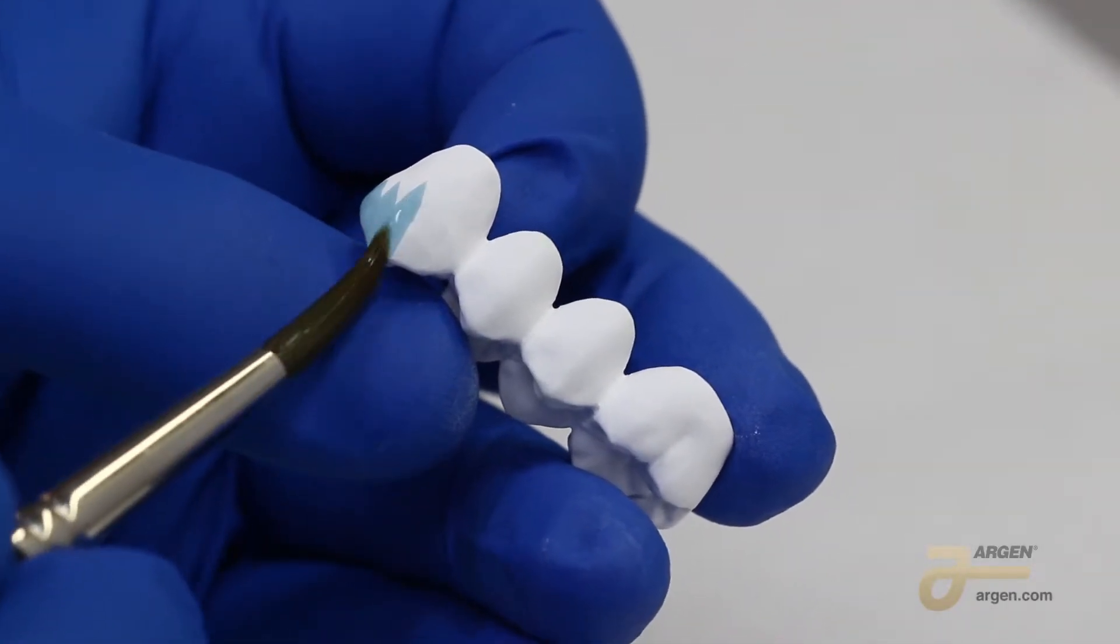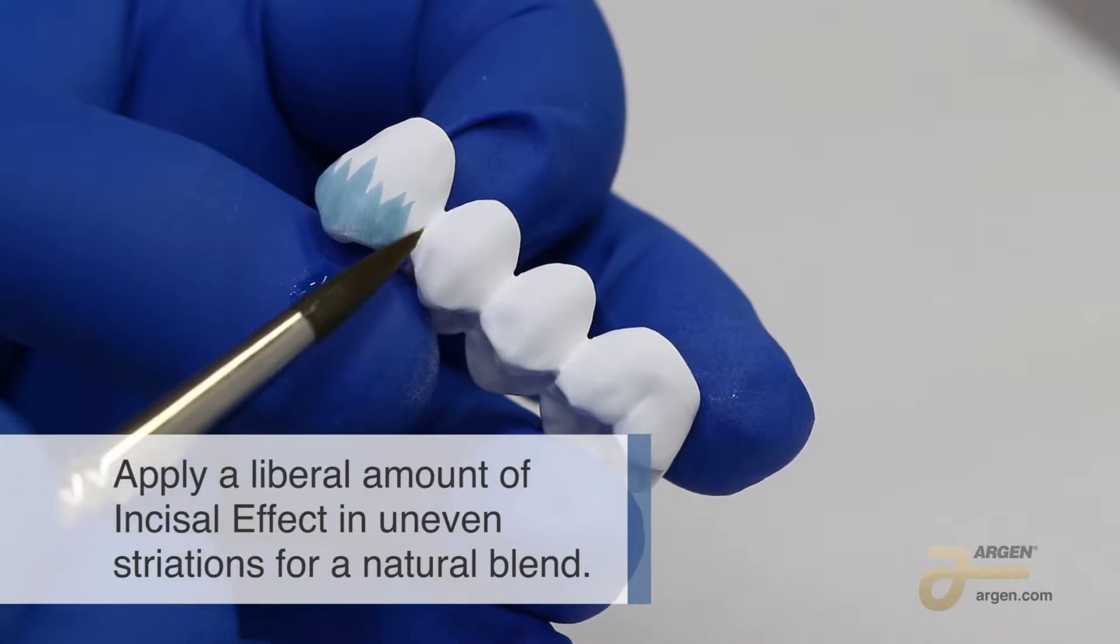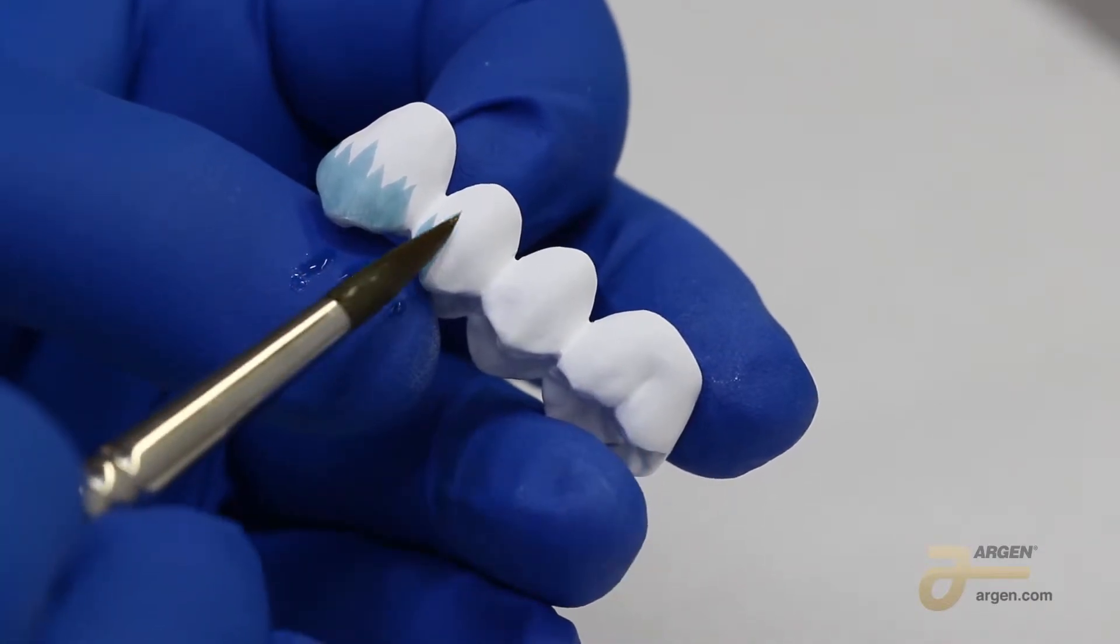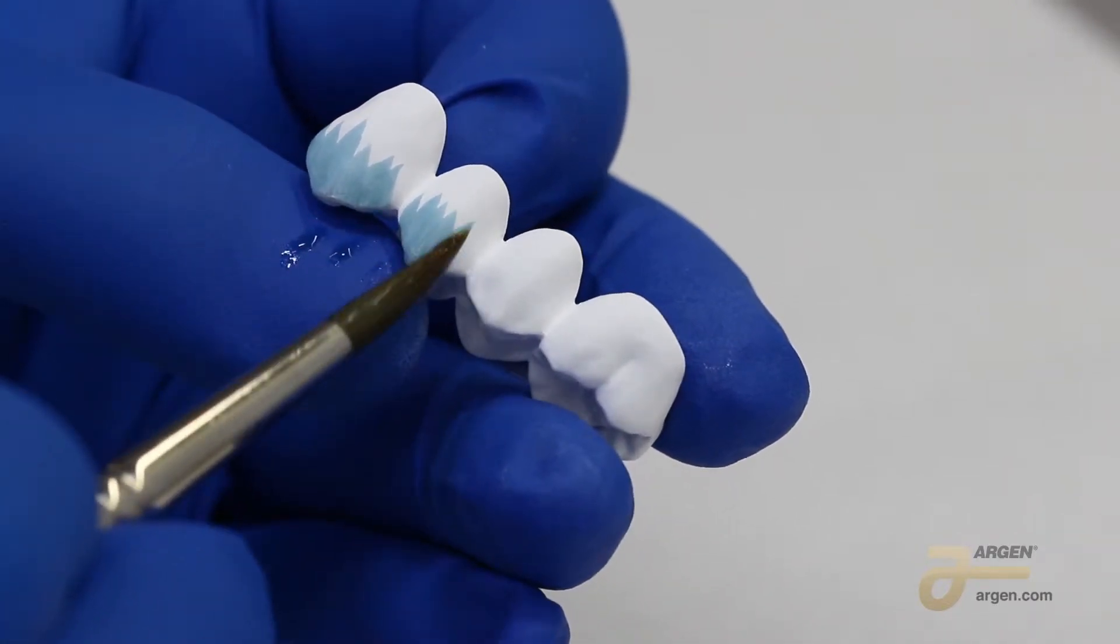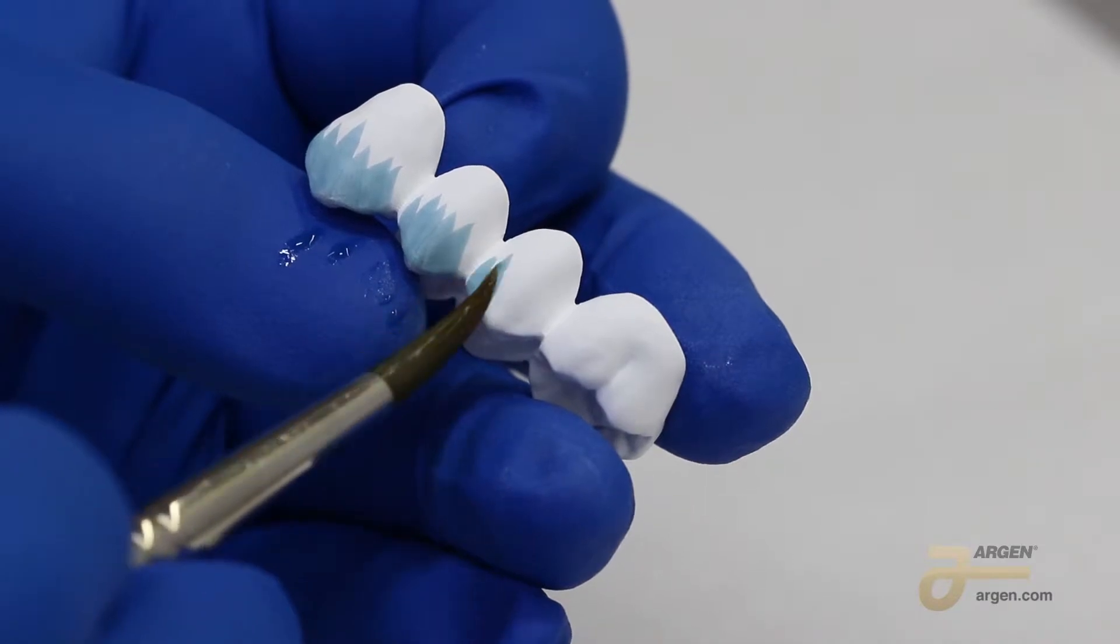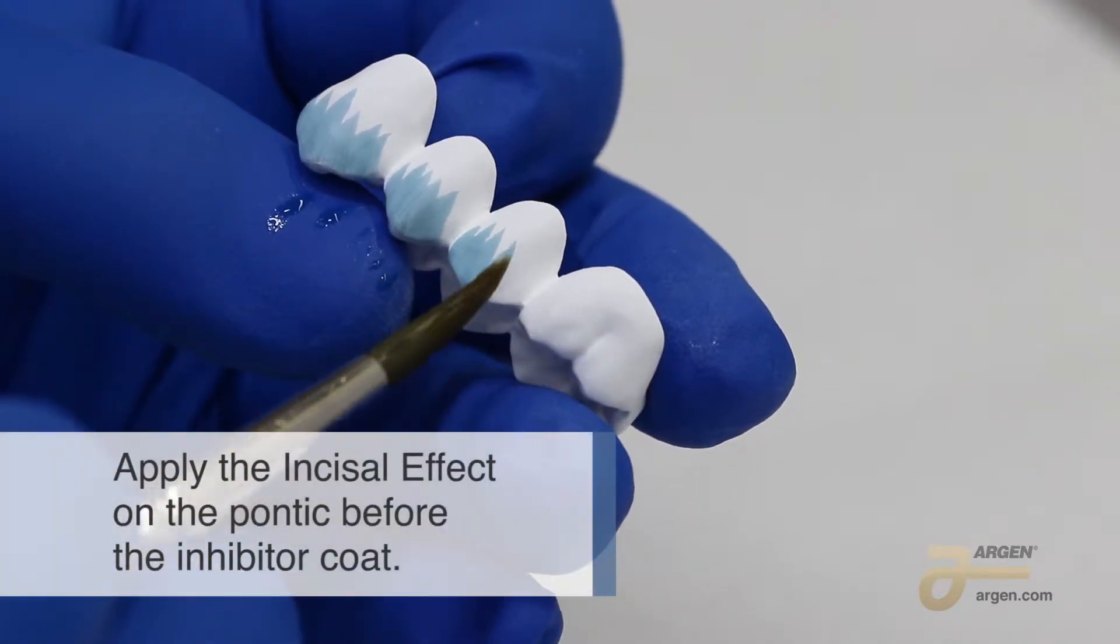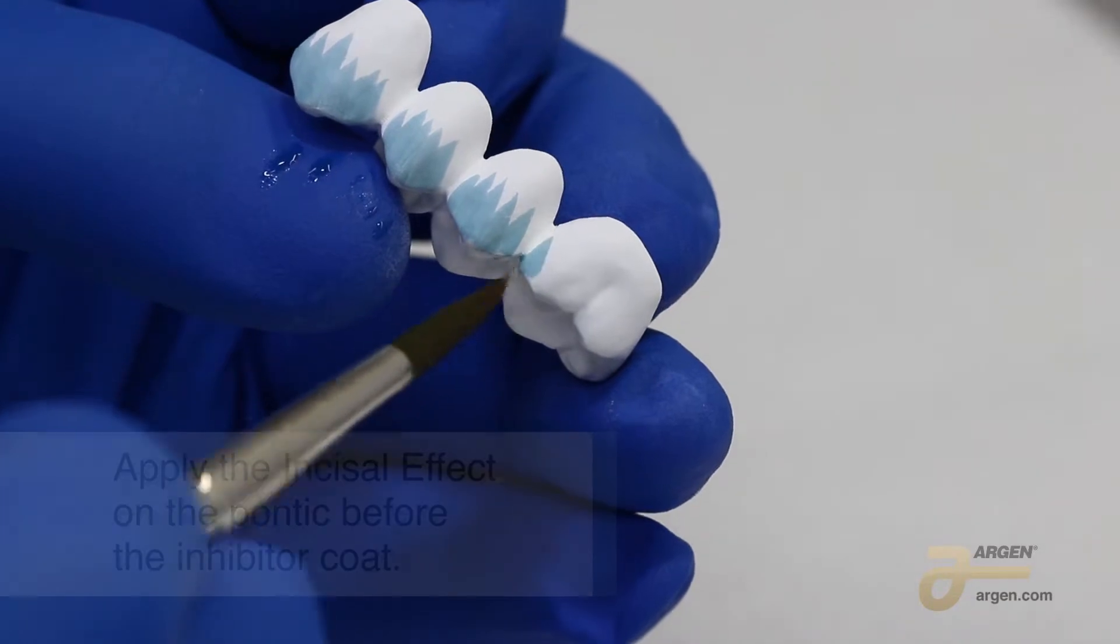Apply a liberal amount of Incisal Effect in uneven striations for a natural blend. Applying more incisal effect will only slightly change incisal intensity. Apply the incisal effect on the pontic before the inhibitor coat for best results.